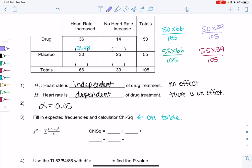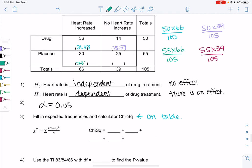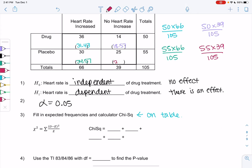And if there's no effect, the no heart rate and drug group should have had 18.57, which was 50 times 39 over 105. So again, it's a little bit different, but maybe this is just random. For bottom left, I get 34.57. So placebo and increased heart rate. And then bottom right, no heart rate increase in placebo, we get 20.43.